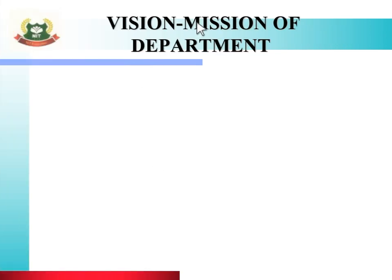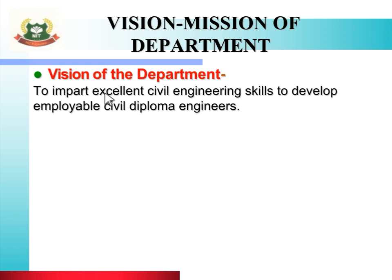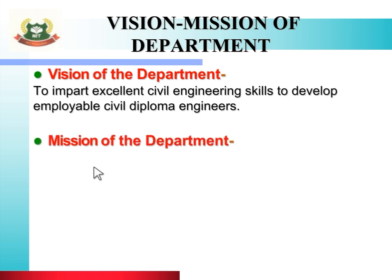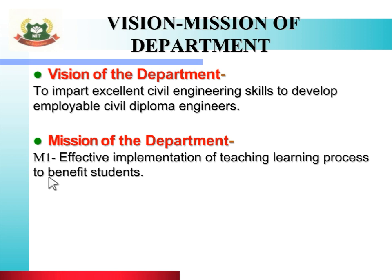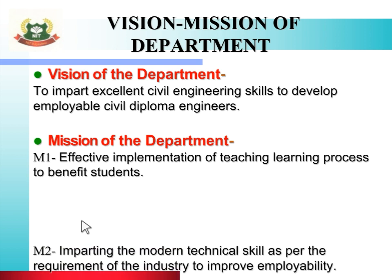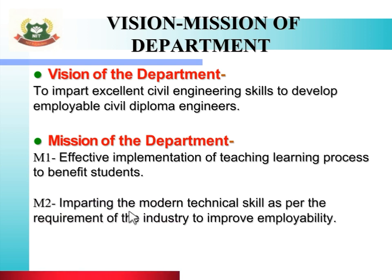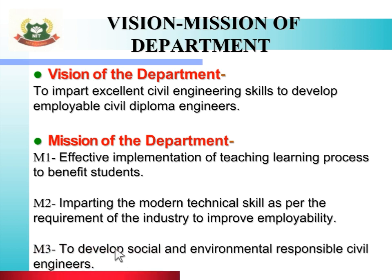Sabse pehle dekhte hai, vision and mission of the department. The vision of the department is to impart excellent civil engineering skills to develop employable civil diploma engineers. There are three missions: Mission one is effective implementation of teaching learning process to benefit students. Mission two is imparting modern technical skills as per the requirement of the industry to improve employability. Mission three is to develop social and environmental responsible civil engineers.